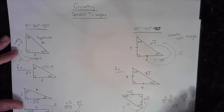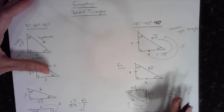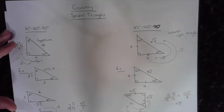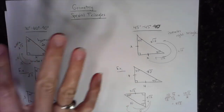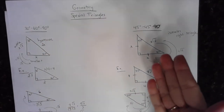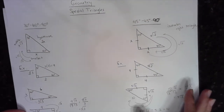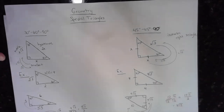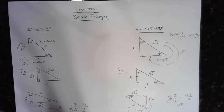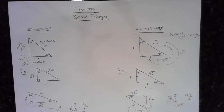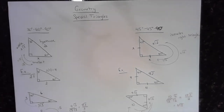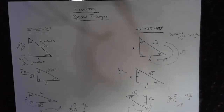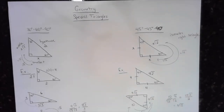These are the two special triangles — they're very important. You see them again in trigonometry with the unit circle, which is actually created from these triangles. Let me know if you need more examples, otherwise good luck!